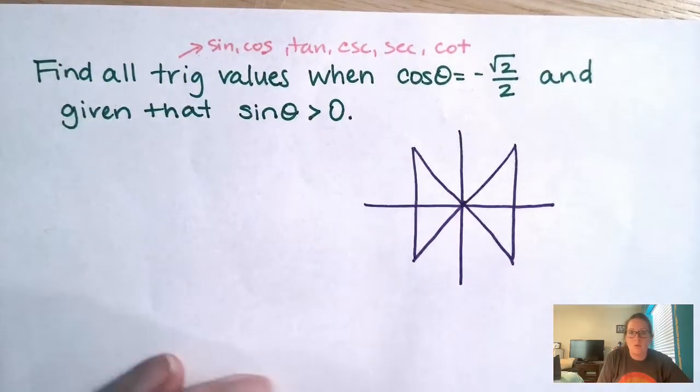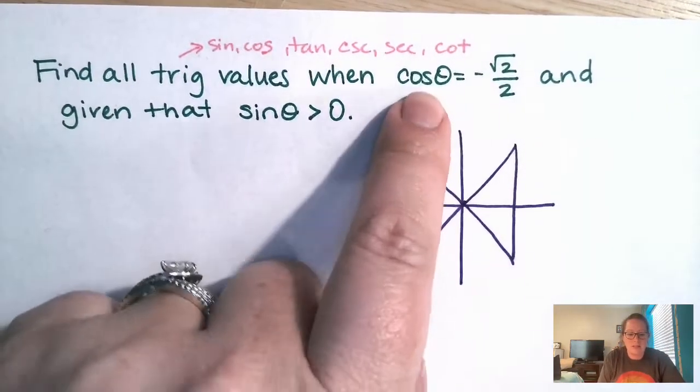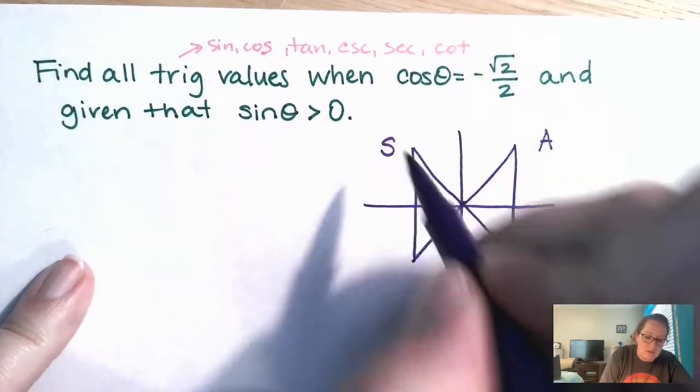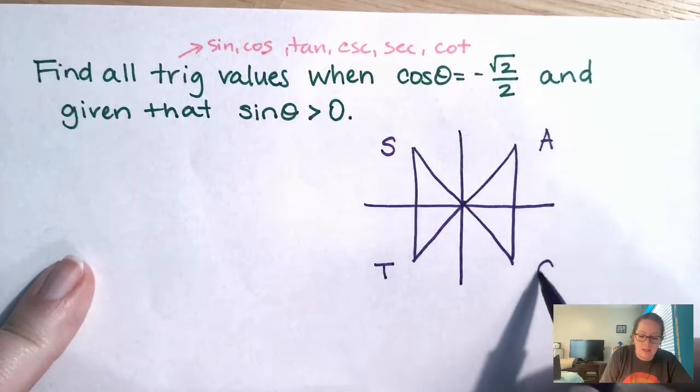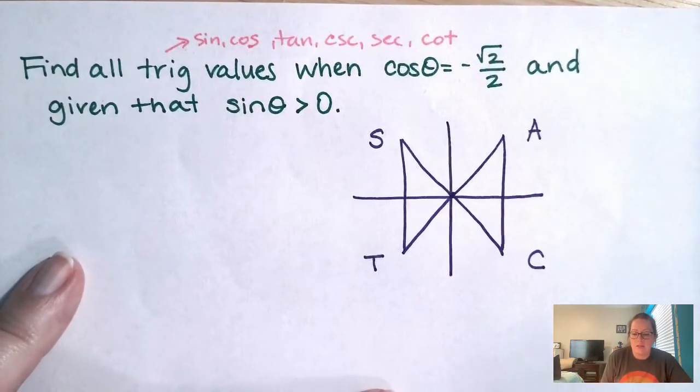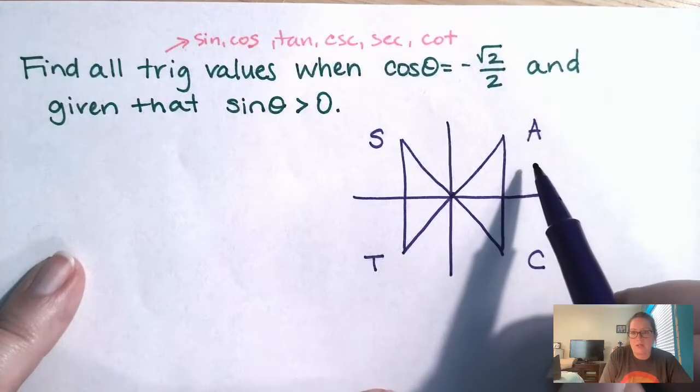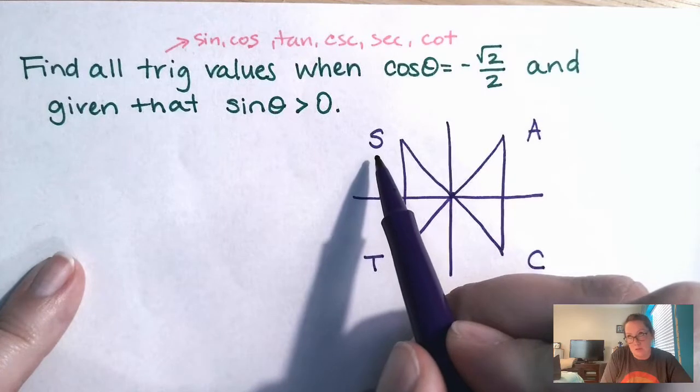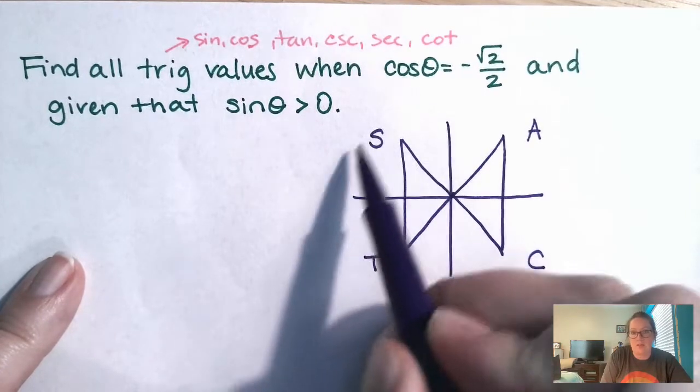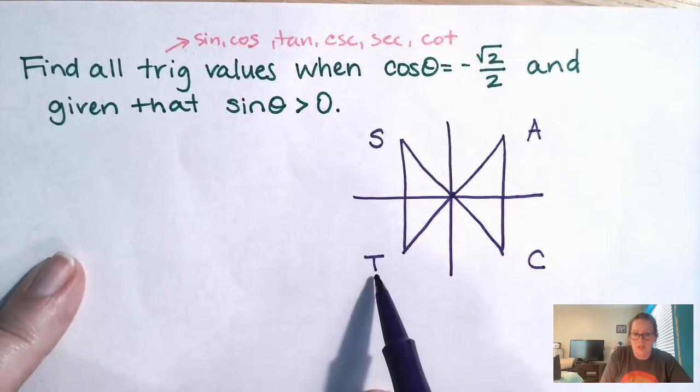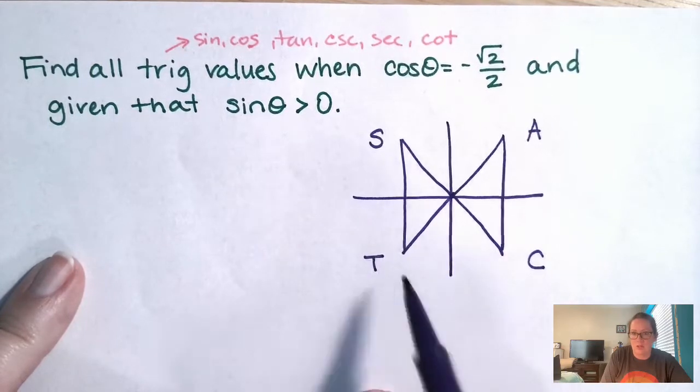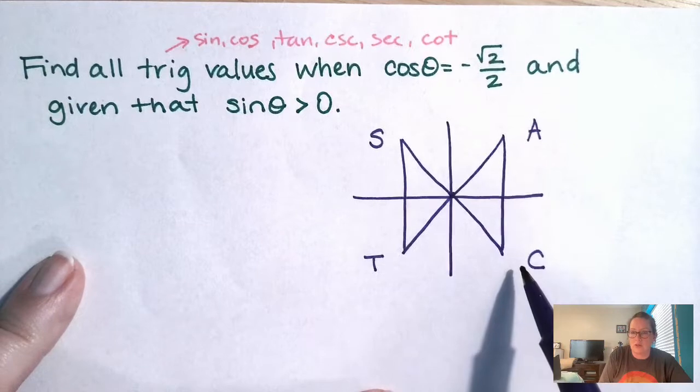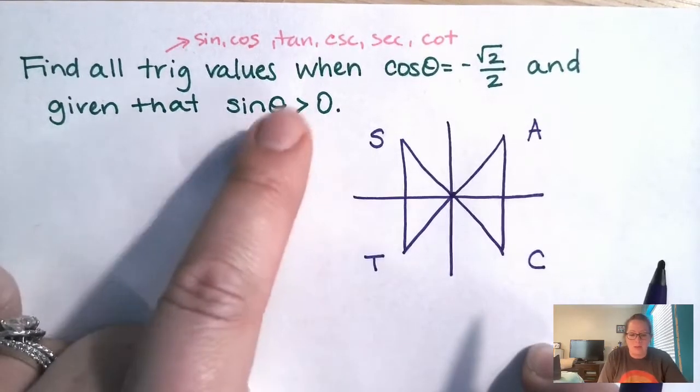Okay, we know, let's see, cosine is a negative. So let's think about this. All students take calc. Okay, all students take calc. That means that all trig ratios are positive in this quadrant. Only sine and the reciprocal, so sine and cosecant are positive in this quadrant. Tangent and cotangent are positive in this quadrant. Cosine and secant are positive in this quadrant. Okay, so that will help us when we come down to this guy.